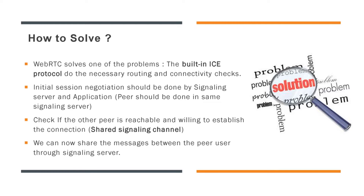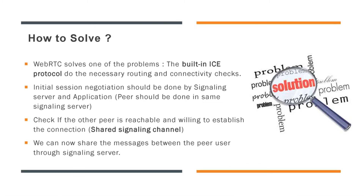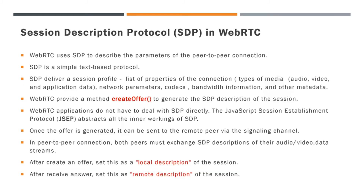The good news is that WebRTC solves one of these problems on our behalf. The built-in ICE protocol performs the necessary routing and connectivity checks. Other problems can be solved with a signaling server, which we already discussed in previous videos. To start a WebRTC peer connection, users should connect through a shared signaling server, which can exchange the necessary information about each user's IP address and other metadata. Now, the question is how the signaling server gets that information — and for that, Session Description Protocol SDP helps create the session parameters for each user.